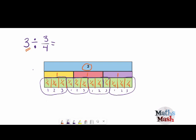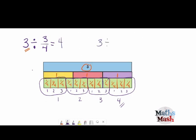So how many groups do we have all together? We have 1, 2, 3, 4. That means that 3 divided by 3 quarters is 4. That means there's 4 groups of 3 quarters.